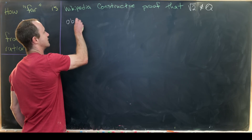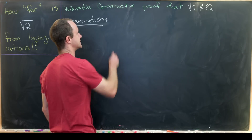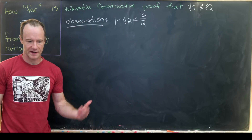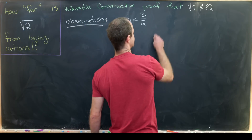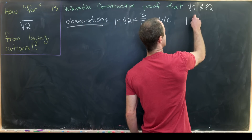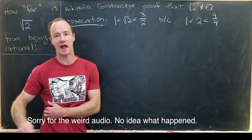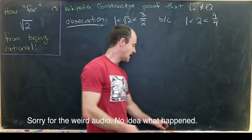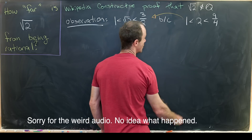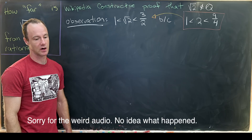Let's start with the following observation, which is pretty clearly true: the square root of two lies between one and one and a half — in other words, between 1 and 3/2. If we square all parts of this inequality, we get 1 < 2 < 9/4. Two equals 8/4, which is less than 9/4. Since the square root function is increasing, the truth of that squared inequality clearly implies the truth of this inequality.